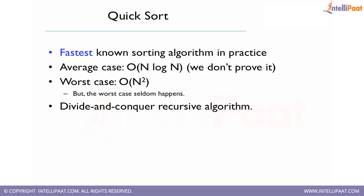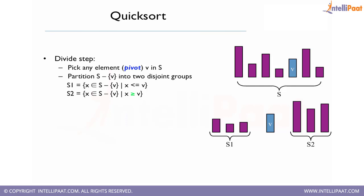Quick sort works using the divide and conquer technique. Divide and conquer works in a recursive manner where we divide our solution into smaller and smaller sub-solutions, solve the smaller sub-solutions, and use the results to solve the bigger solution. Any big problem is divided into smaller problems; we solve the smaller problems and use the results to solve the big problem.